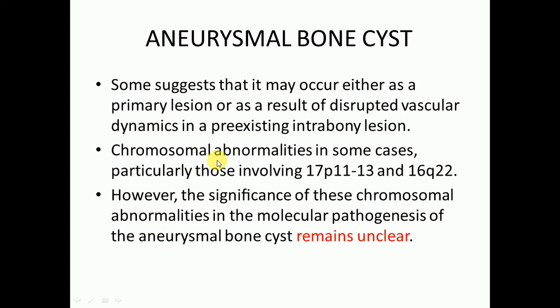Chromosomal abnormalities in some cases may be present, particularly those involving 17p11-13 and 16q22. However, the significance of these chromosomal abnormalities in the molecular pathogenesis of aneurysmal bone cyst remains unclear.